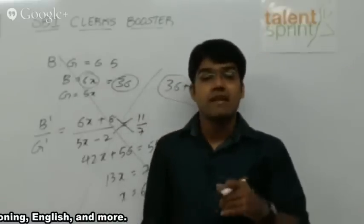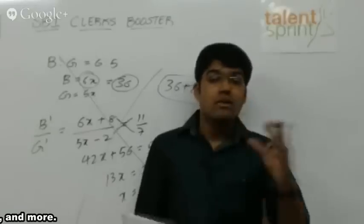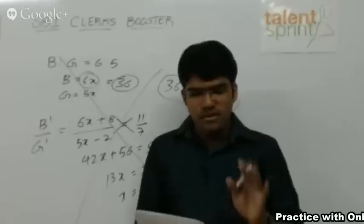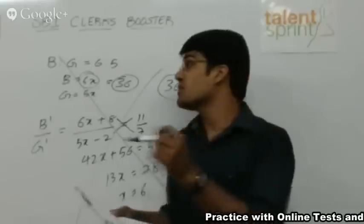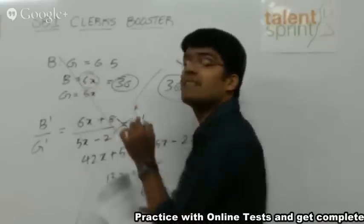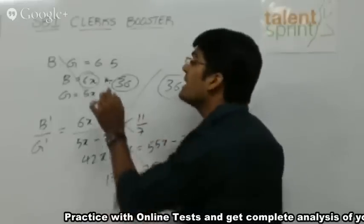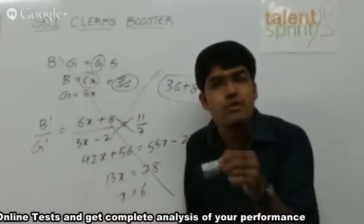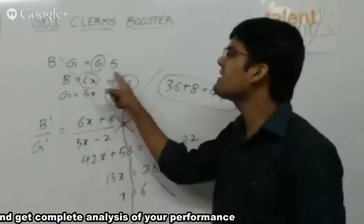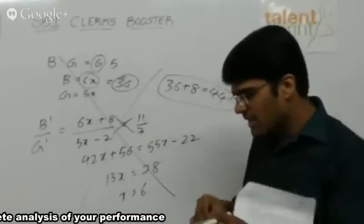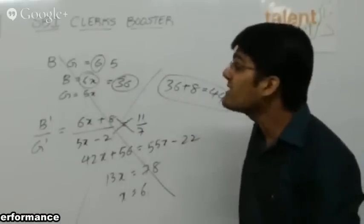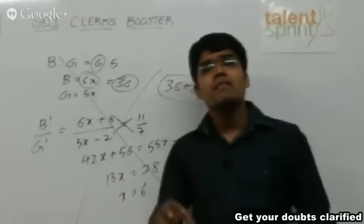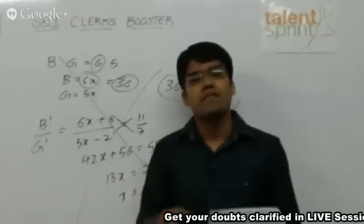What is the smart way of getting the answer? You would be able to understand if you have gone through ratio and proportions, ages and partnership. Simple logic here is, look at this. What is the original ratio? The original ratio of boys and girls is 6 is to 5. So I know that boys are multiples of 6. Whatever is the number of boys, it should be a multiple of 6.